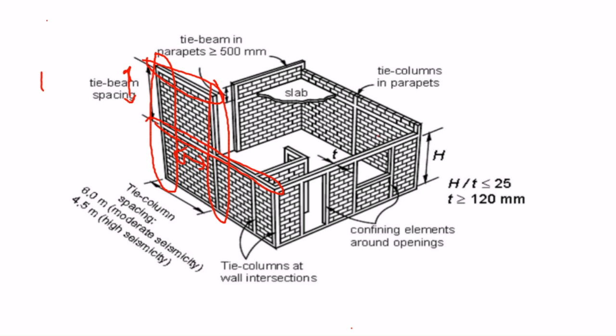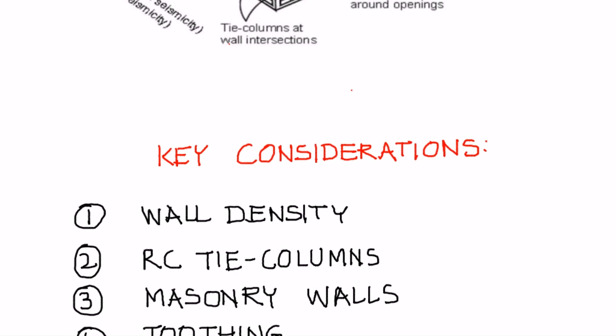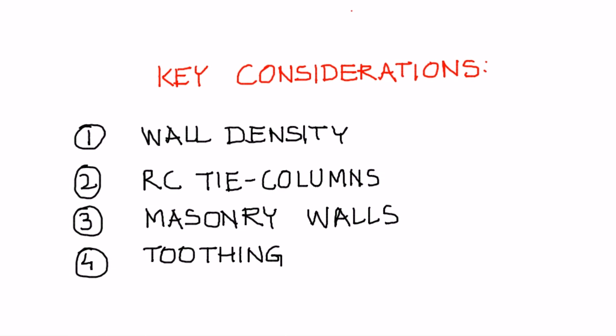Similarly, there are some rules related to wall height and wall thickness. Some of these requirements are included in the codes of countries where confined masonry has been practiced, and in various guidelines which will be mentioned in the resources section. Key considerations discussed in this tutorial are wall density, reinforced concrete tie columns, masonry walls, and toothing at the tie column to wall interface.